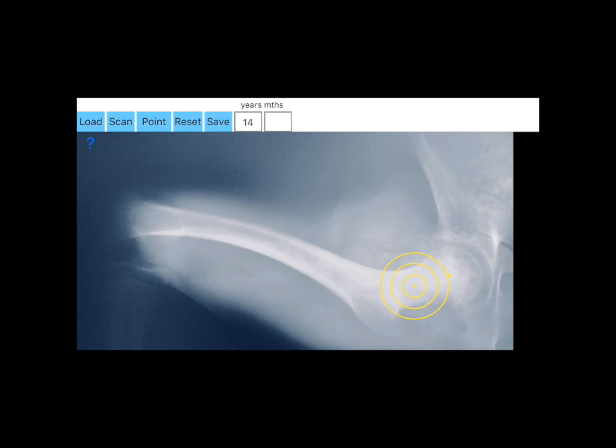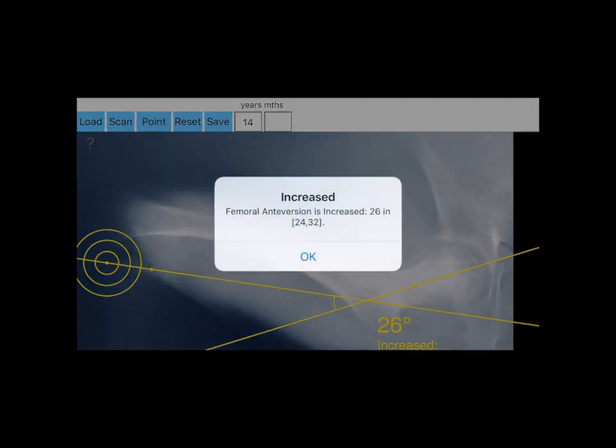Femoral rotational malalignment is associated with pain and functional disability, hip impingement and instability. Measurement of anteversion of the femoral neck is an important component of surgical planning.